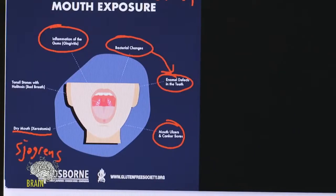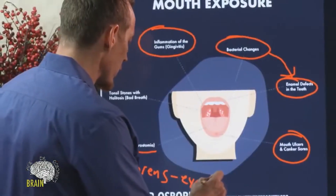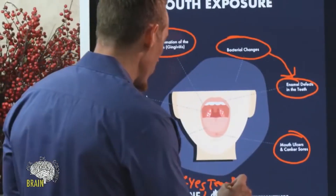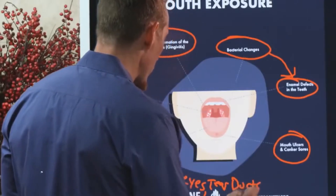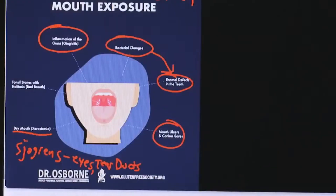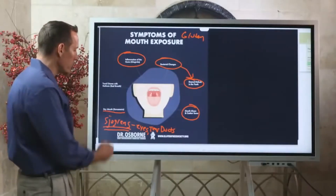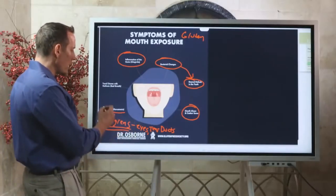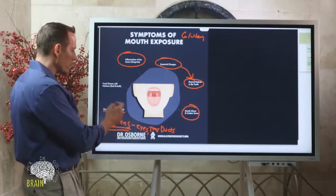There's actually an autoimmune disease called Sjögren's, which manifests as dry mouth, dry eyes, and dry tear ducts. If you struggle with dry eyes, dry tear ducts, and dry mouth simultaneously, ask your doctor to check you for this. There is a gluten association with this condition, meaning gluten can contribute to its development, which is one reason why dry mouth is common.